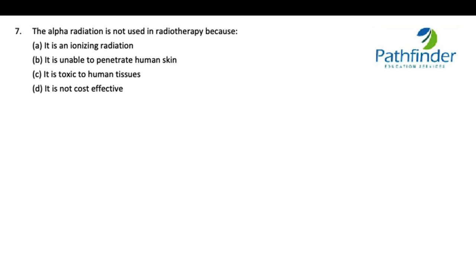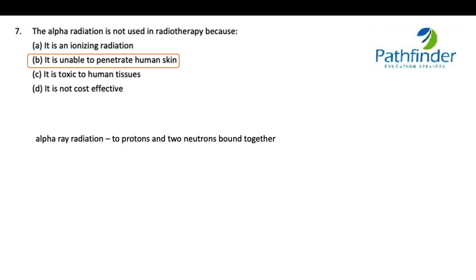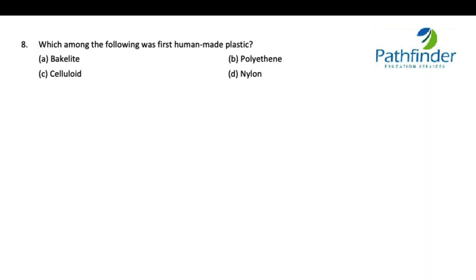Next: alpha radiation is not used in radiotherapy because it is unable to penetrate the human skin. Alpha radiation consists of two protons and two neutrons bound together.